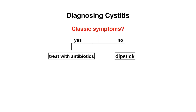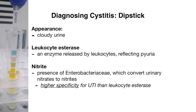When it comes to diagnosing cystitis, if a patient presents with classic symptoms, you can treat with antibiotics. If those classic symptoms are not there, a dipstick can be obtained for further evaluation. In reality, however, you may see physicians who still obtain dipsticks when patients present with classic symptoms. If you'd like to learn about the dipstick or other components of the urinalysis in further detail, feel free to check out our other video about this.